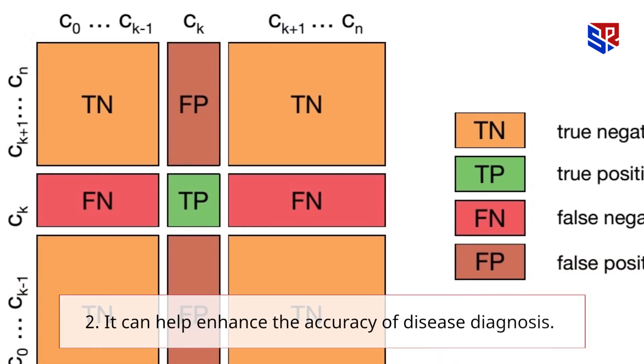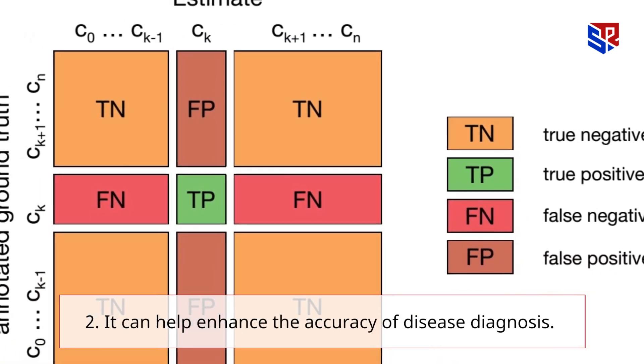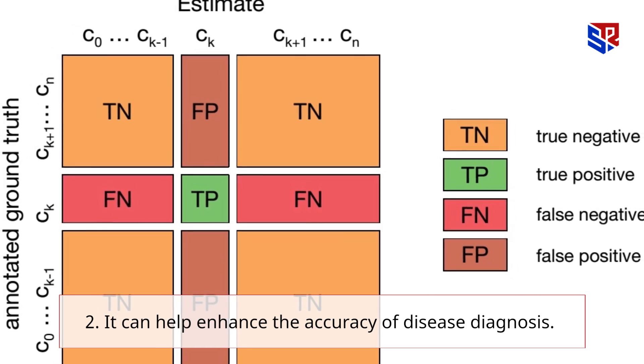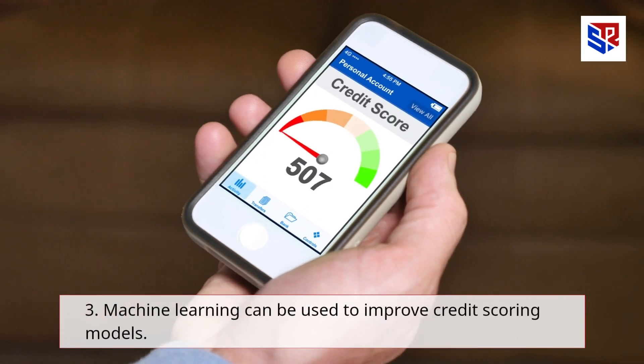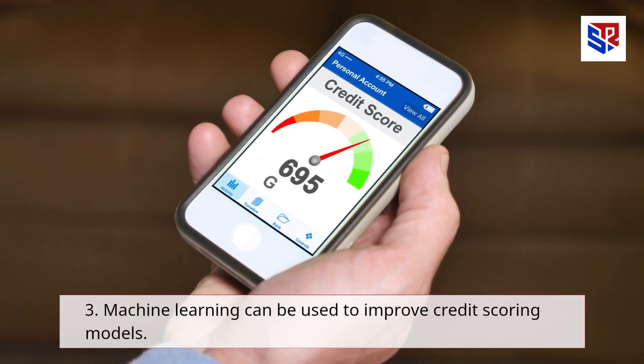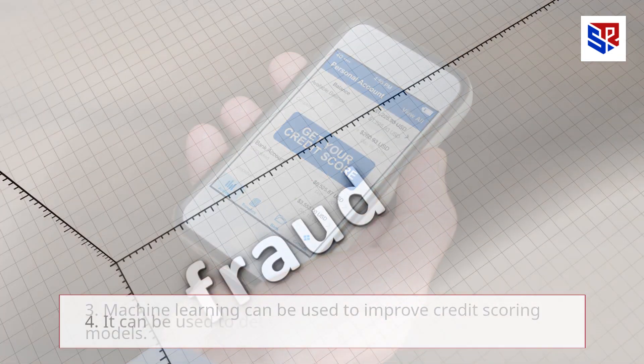2. It can help enhance the accuracy of disease diagnosis. 3. Machine learning can be used to improve credit scoring models.